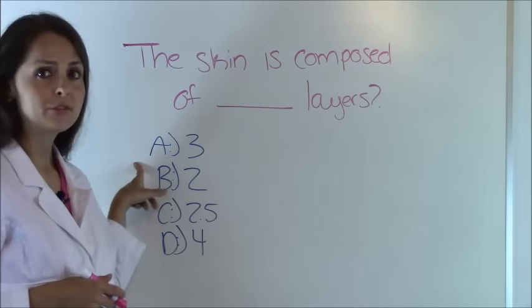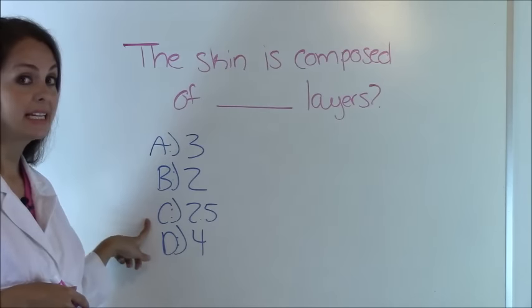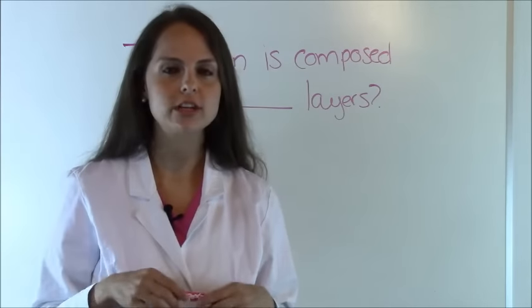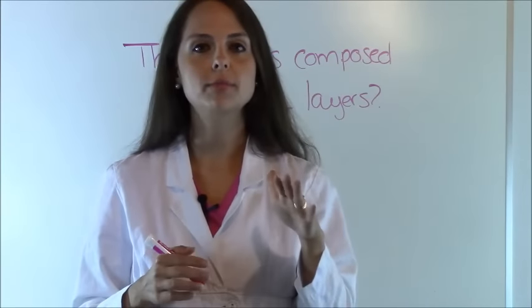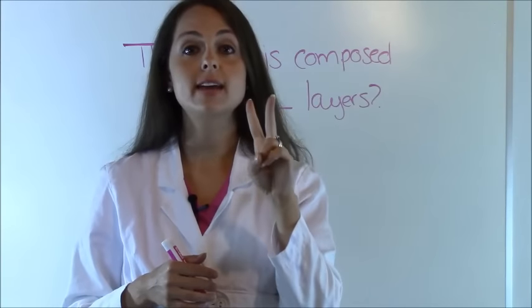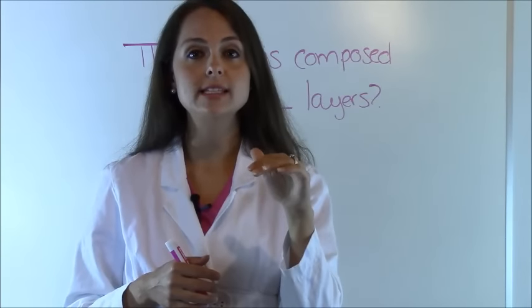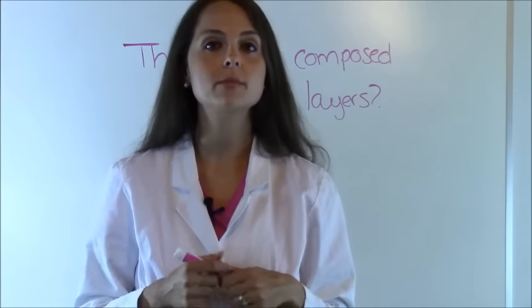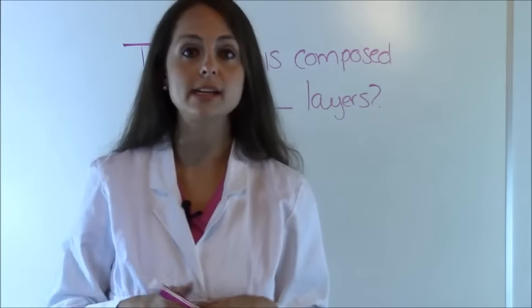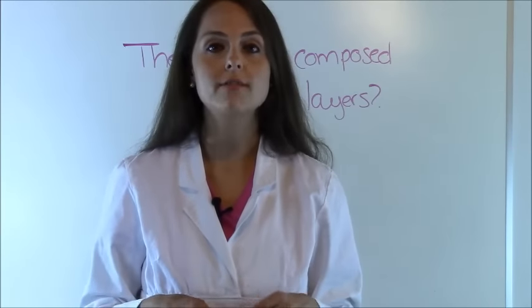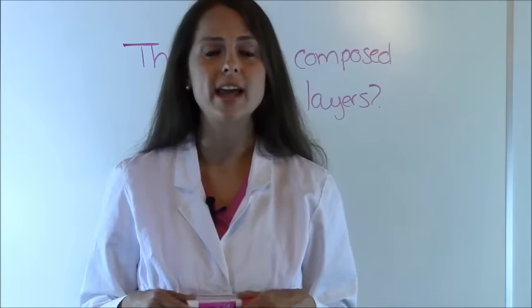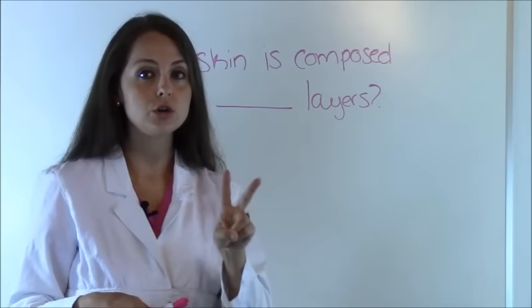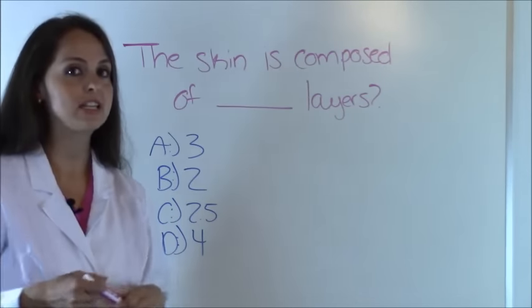We have A: 3, B: 2, C: 2 and a half, or D: 4. Now let's think about this because it's a little bit tricky. You have your top layer which is your epidermis, then you have your second layer which is your dermis, and what did I say at the beginning of the video? There's only two distinct layers because remember a lot of people might want to put three because they're thinking that the hypodermis is part of the integumentary system but it's not.